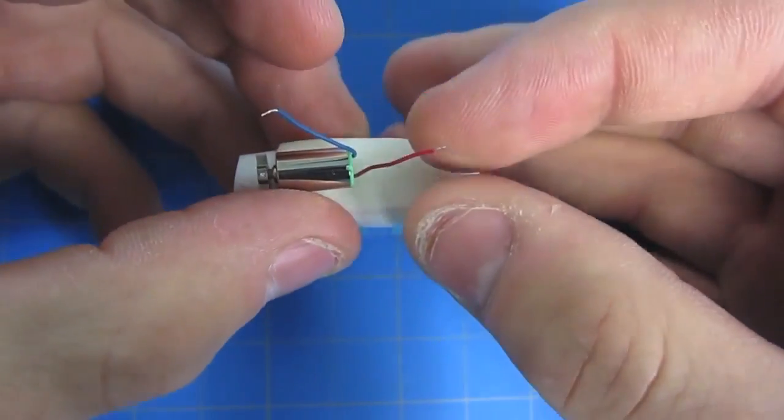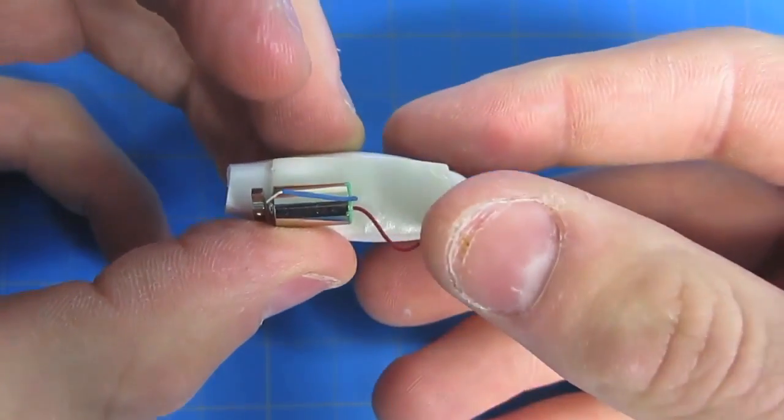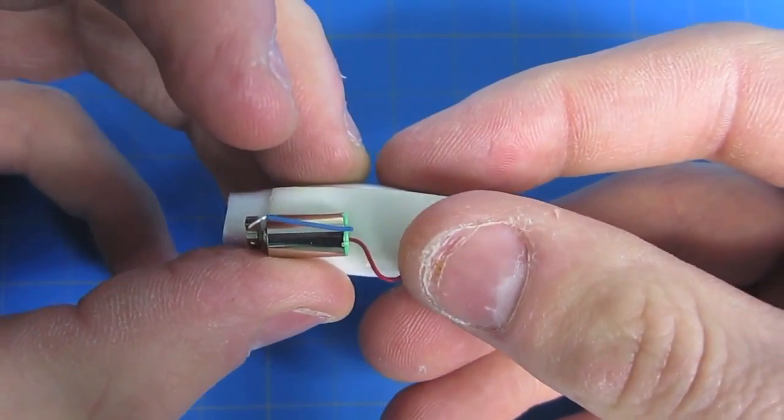Take one of the two wire leads and gently press it onto the foam tape. Make sure it's not too deep, otherwise it won't be able to make contact with the battery.